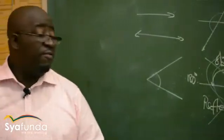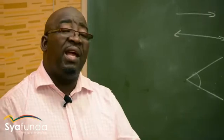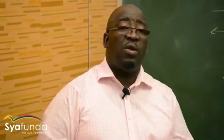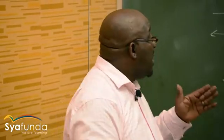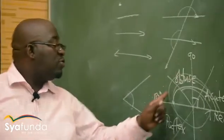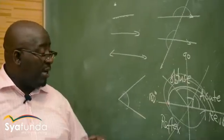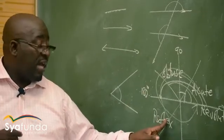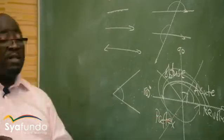To recap the six types of angles: acute angle — greater than 0° but less than 90°; right angle — exactly 90°, indicated by a perpendicular symbol; obtuse angle — greater than 90° but less than 180°; straight line — equal to 180°; reflex angle — greater than 180° but less than 360°; and the revolution — equal to 360°.